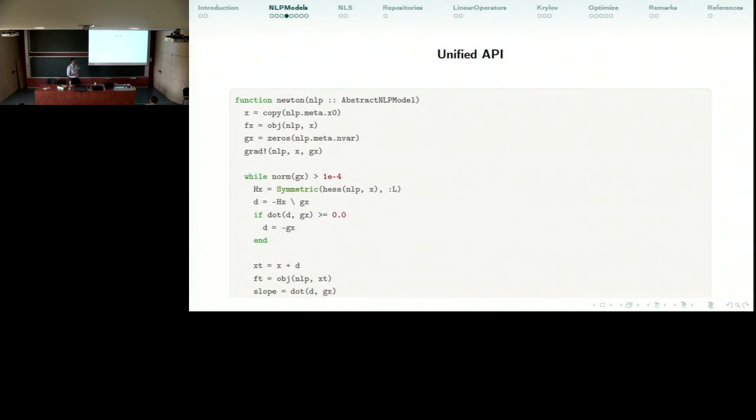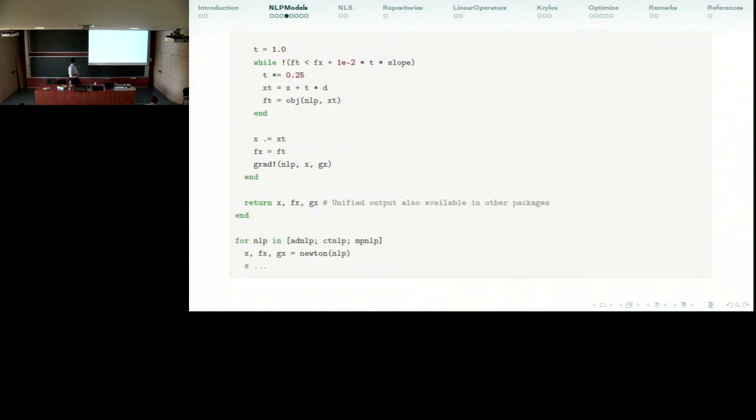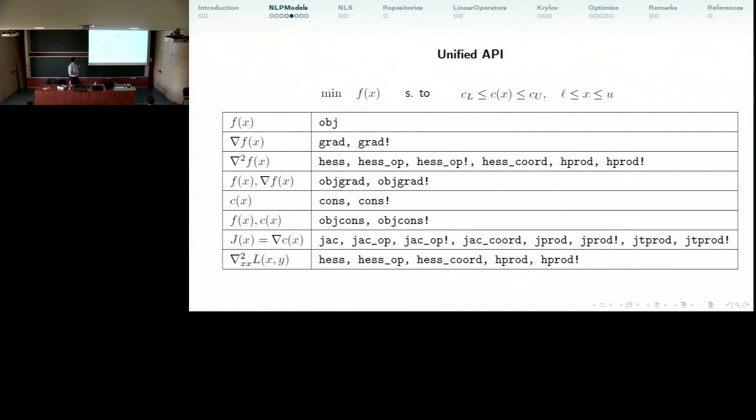So this is a simple implementation of Newton with Armijo line search. And here is the function call of newton_nlp which can receive any of these three methods that I've created before. We have more methods of course.